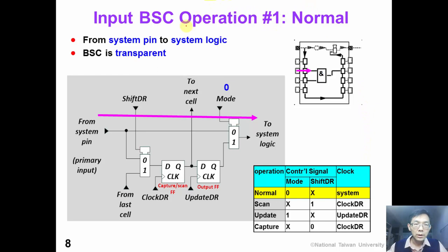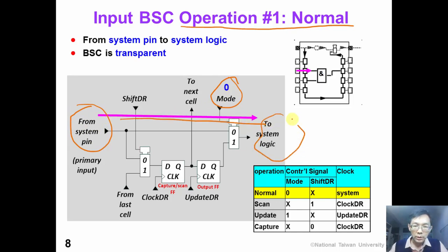Totally, we can support four different operations using an input boundary scan cell. The first operation is normal operation. In this operation the control signal mode is tied to logic zero, so the input signal comes in directly from the system input to the system logic, and the boundary scan cell is in transparent mode. As we can see in the upper right figure, the input signal just passes through the input boundary scan cell. In normal operation we clock the system clock to operate the system logic.